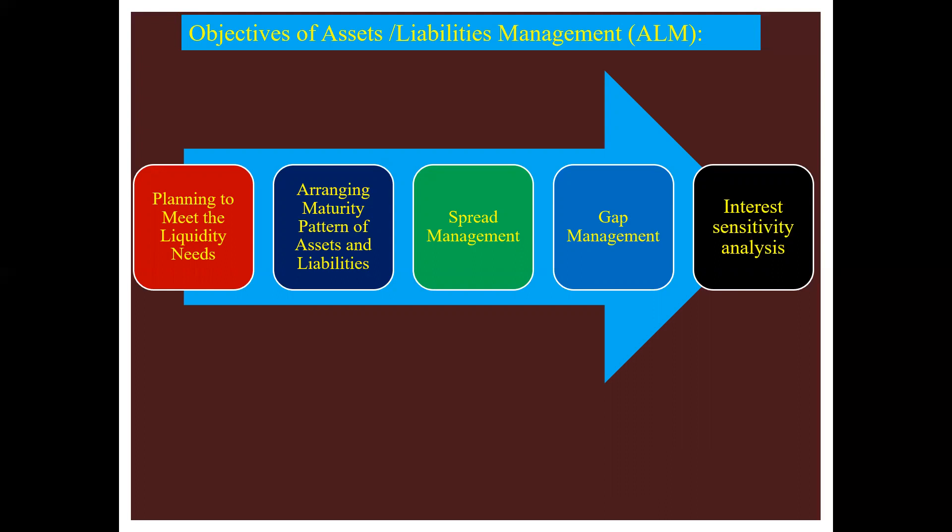The second objective is arranging the maturity pattern of assets and liabilities. Matching assets and liabilities over different time bands and keeping a tag on their price by limiting exposure to interest rate risk are key issues in the ALM process. Controlling the rates received and paid on assets and liabilities to maximize the spread or net interest income is the final responsibility of ALM, without exposing the bank to excessive risk of default.